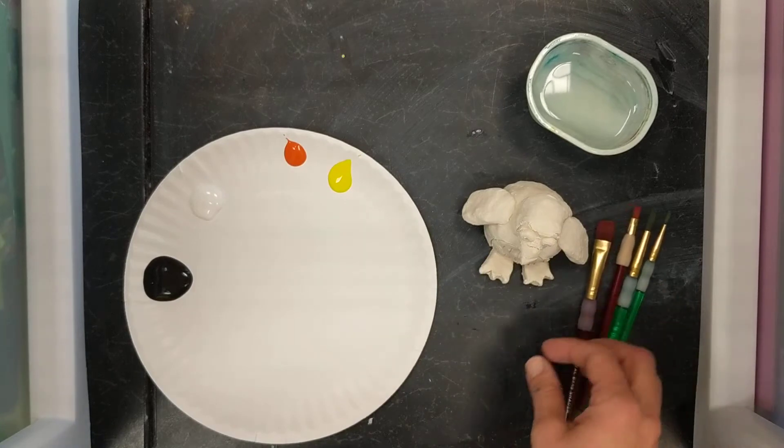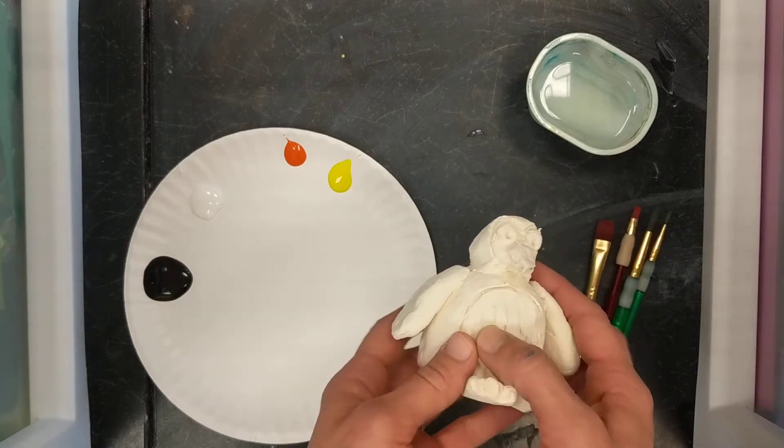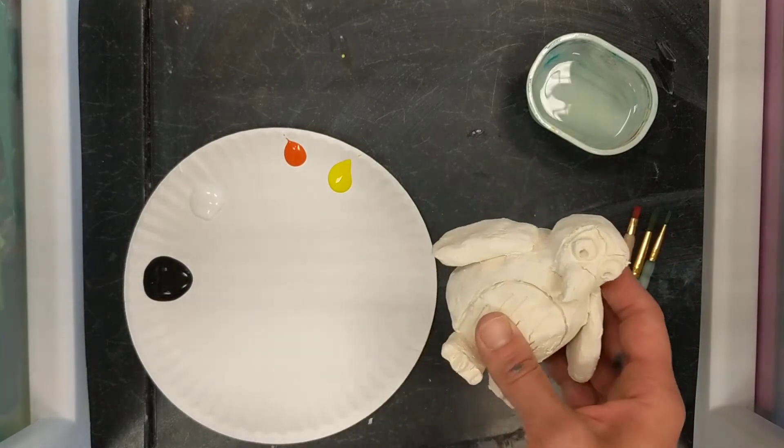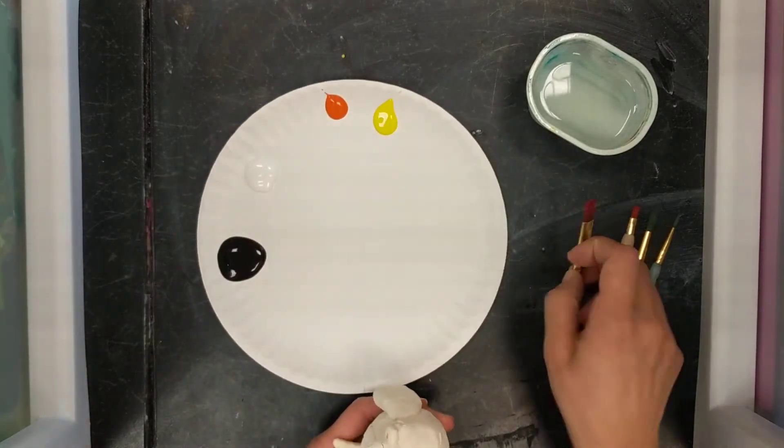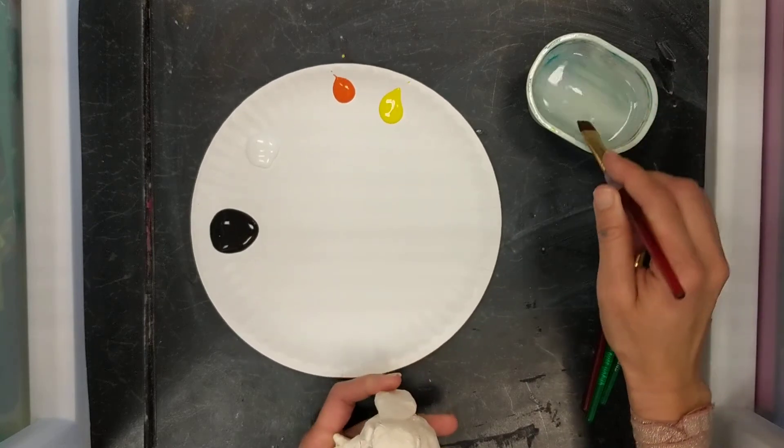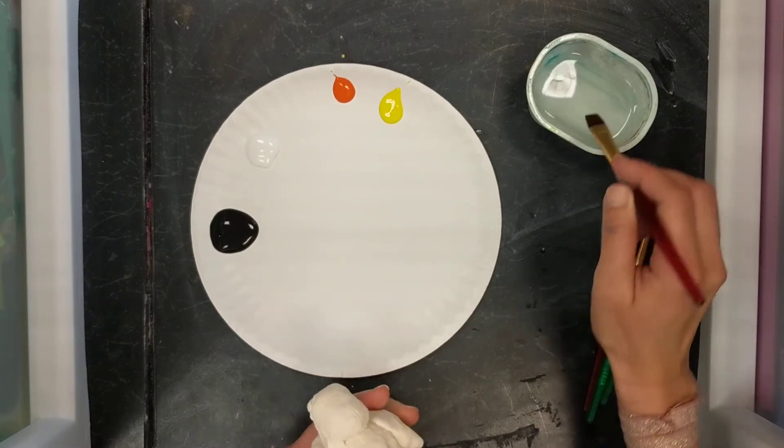So to start, once I'm all ready and have my supplies, I'm going to take my penguin here and I'm going to start with the big areas first. So I'm going to get the black. Now water is your friend here, remember that. Water is going to help spread out the paint.